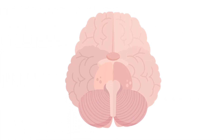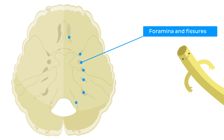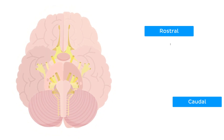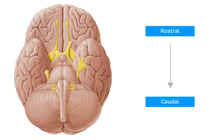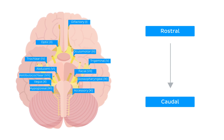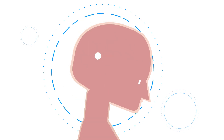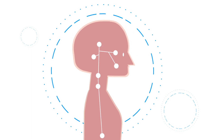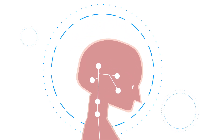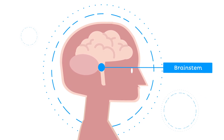The cranial nerves are a set of 12 pairs of peripheral nerves emerging from the brain. They exit the cranium through foramina and fissures, which are holes we have in our skulls. This location of exit, from rostral to caudal, or from top to bottom in our image, is what determines their numerical order. They innervate structures of the head and neck, and one of them extends beyond the neck to innervate thoracic and abdominal viscera. The cranial nerves originate from nuclei in the brain, and most of them are located in the brain stem.